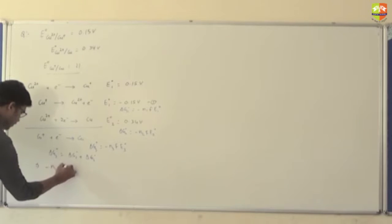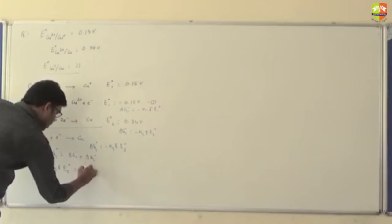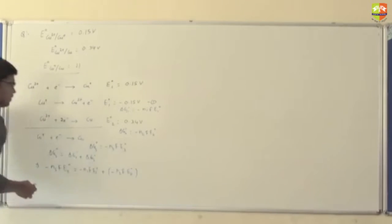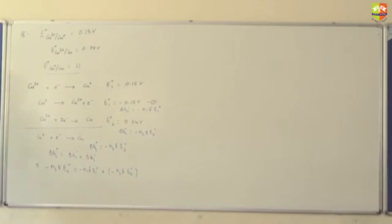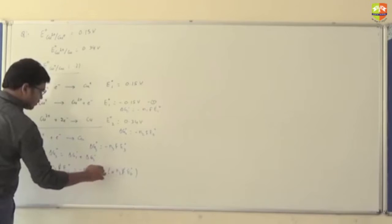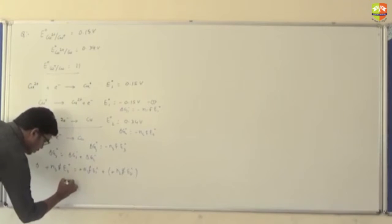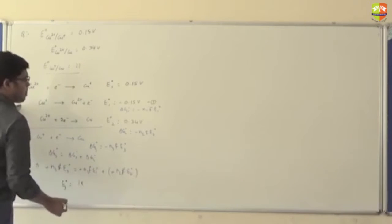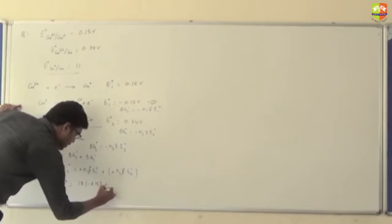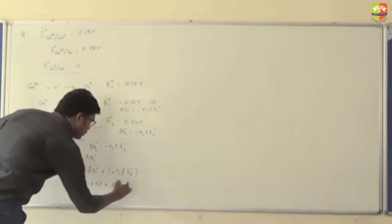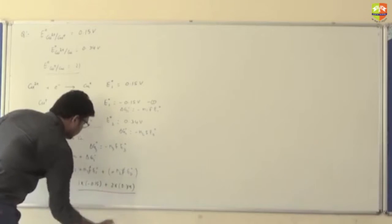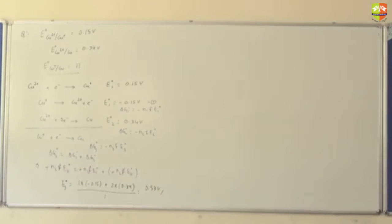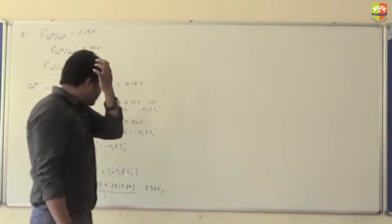Since we added the two equations, ΔG₁° + ΔG₂° = ΔG₃°. So −N₃FE°₃ = −N₁FE°₁ + (−N₂FE°₂). Therefore E°₃ = (N₁×E°₁ + N₂×E°₂) / N₃ = (1×(−0.15) + 2×0.34) / N₃. N₃ value is 1, giving 0.53. Always remember: ΔG you add or subtract — E cannot be directly added or subtracted.